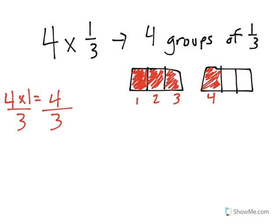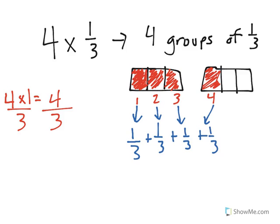How does this relate to addition? Well, really what I have here is 4 groups of 1 third. And if I add them all together — 1 third plus 1 third plus 1 third plus the fourth group of 1 third — remember when we're adding fractions with the same denominator, the denominator remains the same and we only add the numerators. So 1 plus 1 plus 1 plus 1 is equal to 4 thirds.